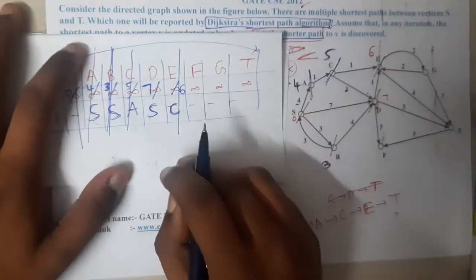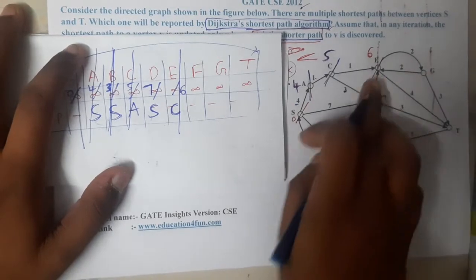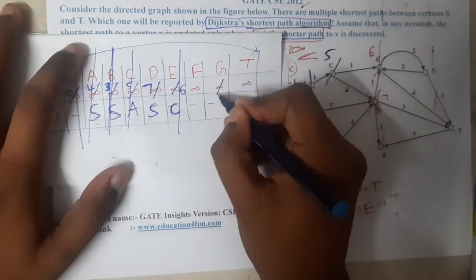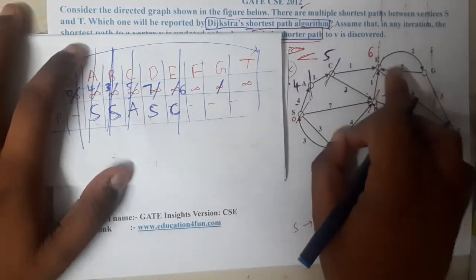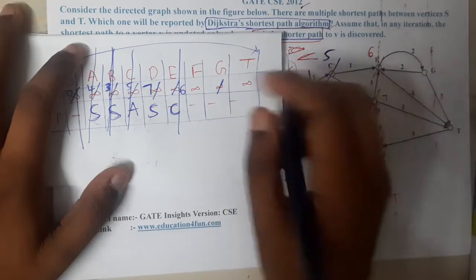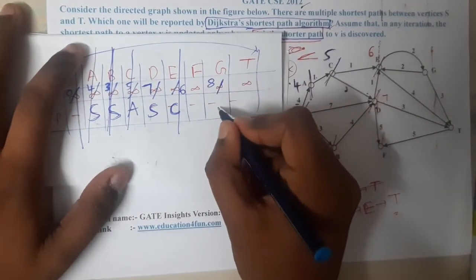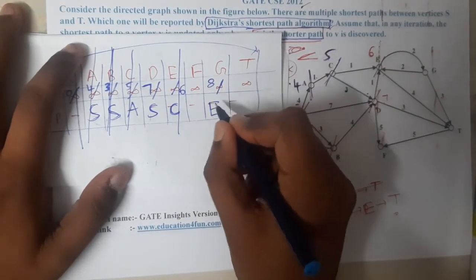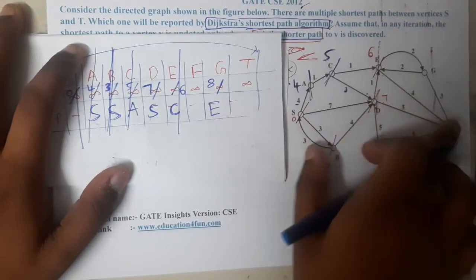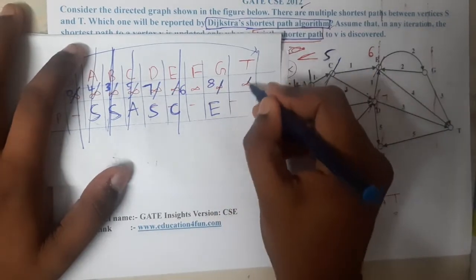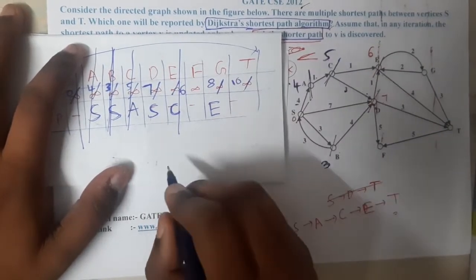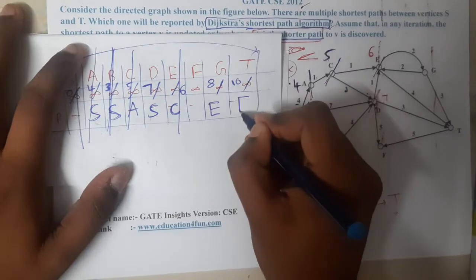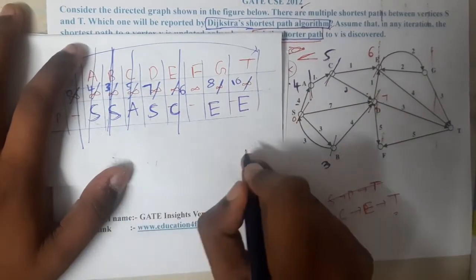The next minimum is e with distance 6. From e, we can go to g at cost 2, so 6+2=8 — g is updated to 8 with parent e. To t the cost is 6+4=10 — t is updated to 10 with parent e.